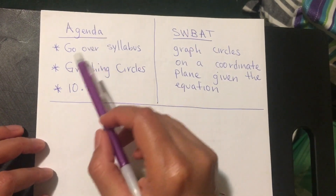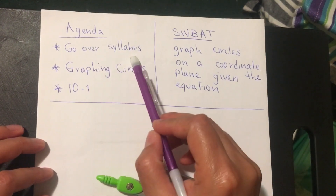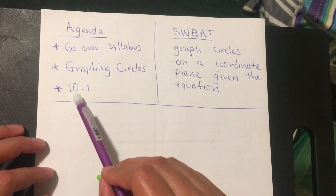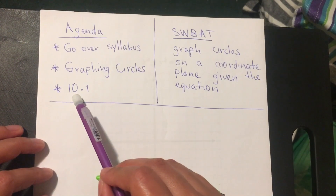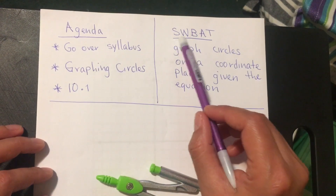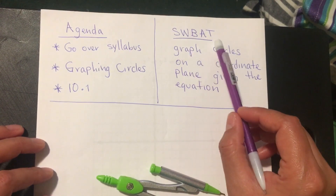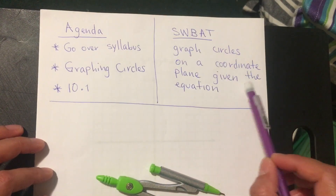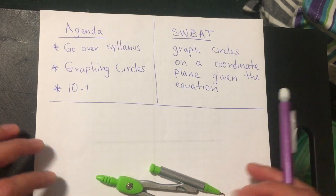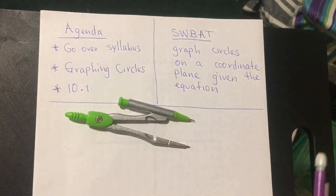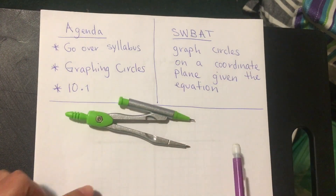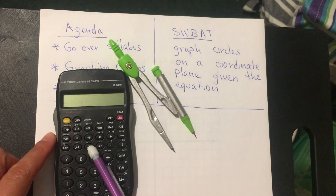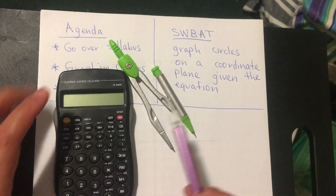Hello students, today's agenda is to go over the syllabus, we're going to be graphing circles, and students will be able to work on 10.1. For this lesson you will need a compass and a scientific calculator that has the square root function.